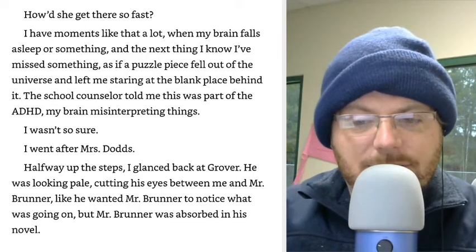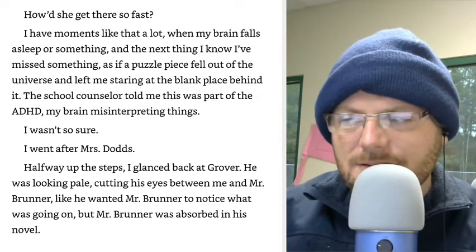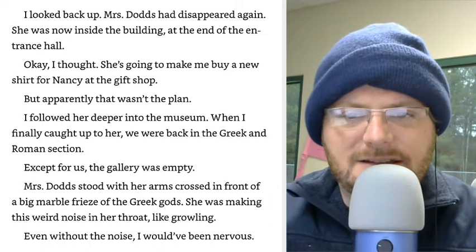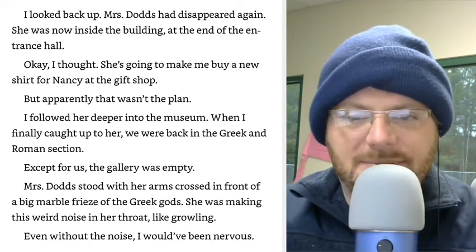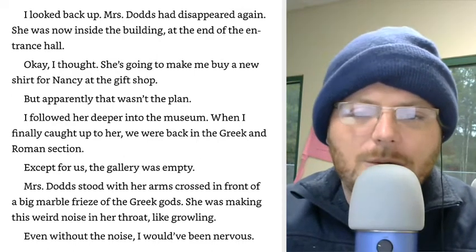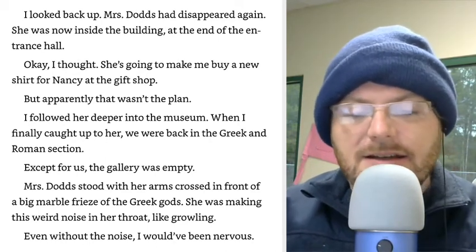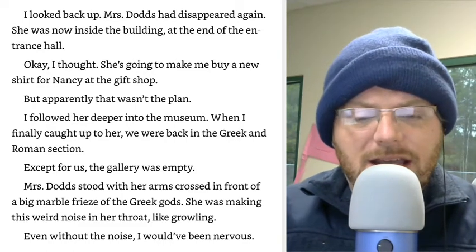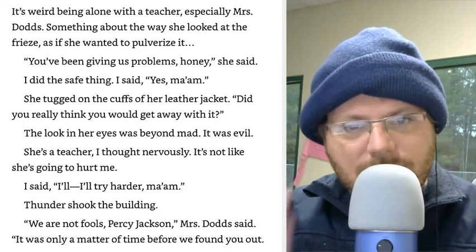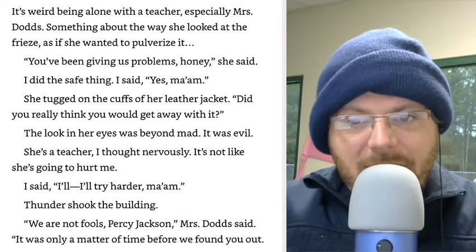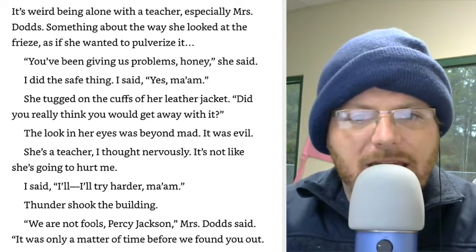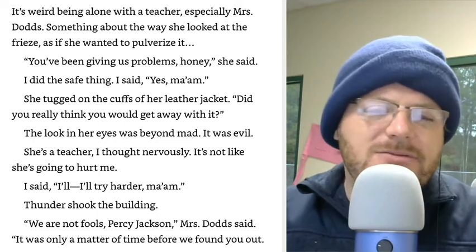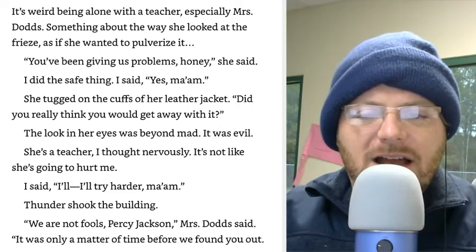Mrs. Dodds had disappeared again — she was now inside the building. I followed her deeper into the museum. When I finally caught up to her, we were back in the Greek and Roman section. Except for us, the gallery was empty. Mrs. Dodds stood with her arms crossed in front of a big marble frieze of the Greek gods. She was making this weird noise in her throat, like growling. It's weird being alone with a teacher, especially Mrs. Dodds — something about the way she looked at the frieze as if she wanted to pulverize it. 'You've been giving us problems, honey,' she said. I did the safe thing and said, 'Yes, ma'am.' She tugged on the cuffs of her leather jacket. 'Did you really think you would get away with it?' The look in her eyes was beyond mad. It was evil.